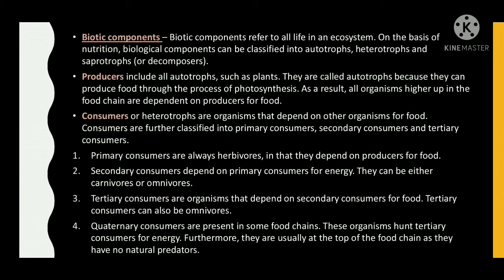Producers include autotrophs such as plants. They are called autotrophs because they can produce food through the process of photosynthesis. As a result, all organisms higher up in the food chain are dependent on producers for food.